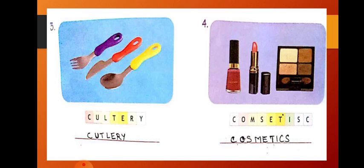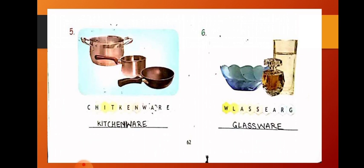Fourth one, read the jumbled words and then write it in a proper way. That is cosmetics. C-O-S-M-E-T-I-C-S. Now, fifth one is kitchenware. K-I-T-C-H-E-N, kitchen. W-A-R-E, kitchenware. And the sixth one is glassware. G-L-A-S-S, glass. W-A-R-E, glassware.